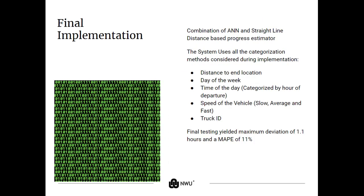The final implementation was a combination of an artificial neural network and a straight-line distance based estimator. All the straight-line distance based estimator did was estimate the progress through the current segment of a route to try and help the neural network to adapt the ETA. The system used all the different categorization methods listed, and it yielded a maximum deviation of 1.1 hours and a mean average percentage error of 11%.